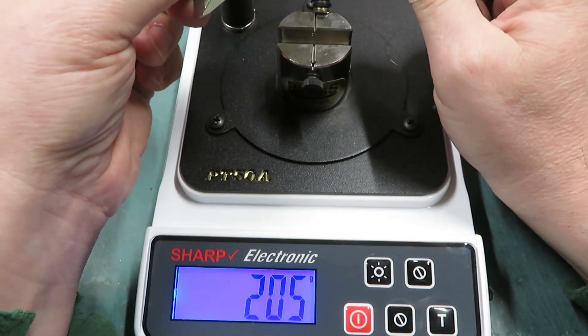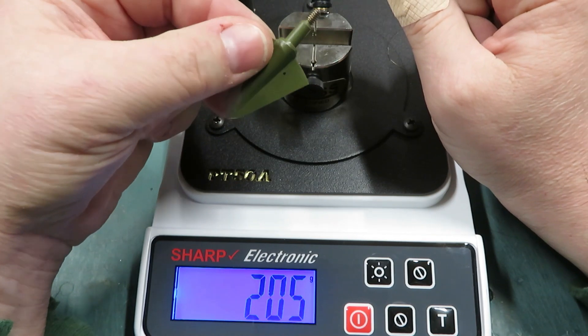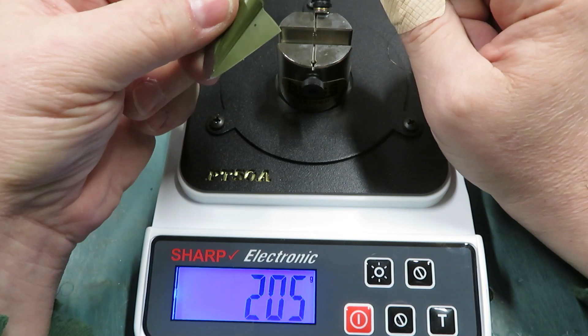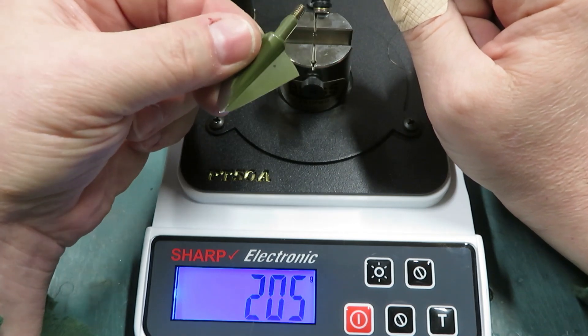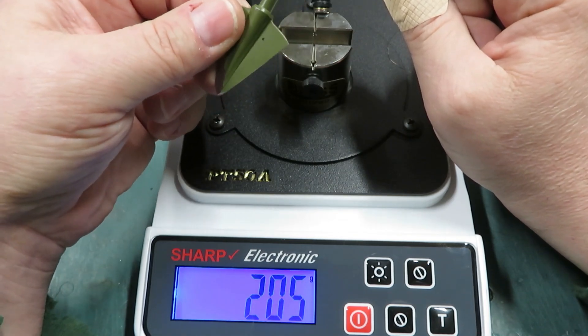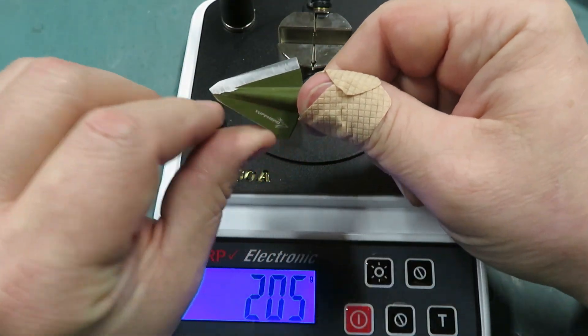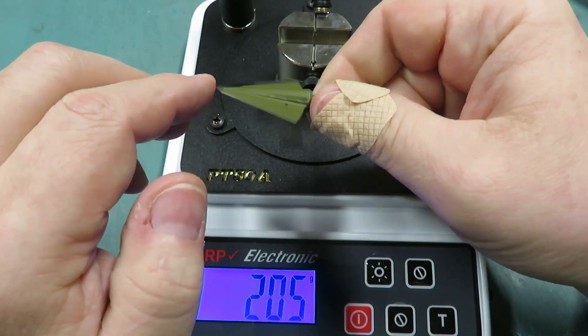205. That might be the best factory edge that I've seen. That's exceeding the fine cutlery range on the BESS scale. So that is impressive. That is a good edge. Kudos to them.